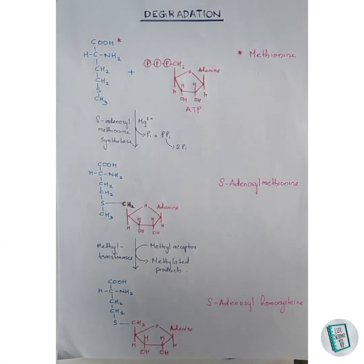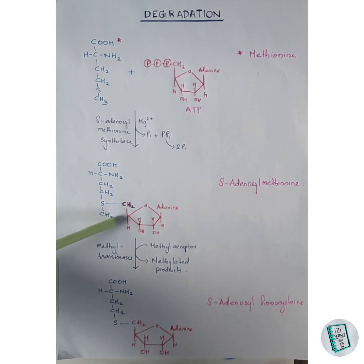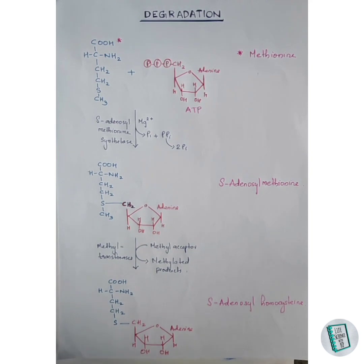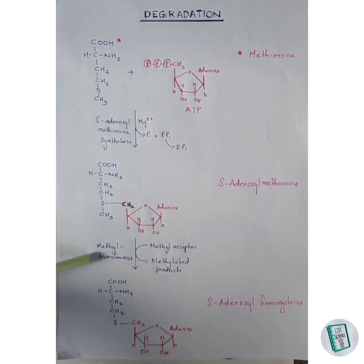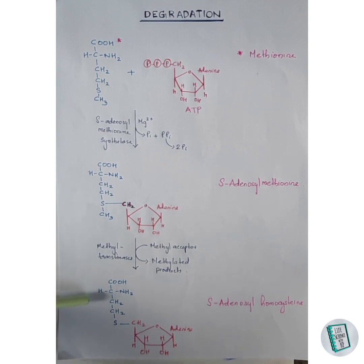In the second reaction, the methyl group attached to S-adenosylmethionine is transferred to methyl acceptor molecules — such as norepinephrine for the synthesis of epinephrine — in the presence of methyltransferase enzyme. This results in the formation of S-adenosylhomocysteine.